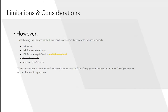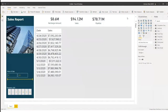When composite models v-next ships, there will still be some limitations: SAP HANA, SAP BW, and SQL Server Analysis Services multidimensional mode (UDM with MDX) are not in scope. What will be supported: SQL Server Analysis Services tabular, Azure Analysis Services, and Power BI datasets. From those sources you'll be able to extend and personalize your data.